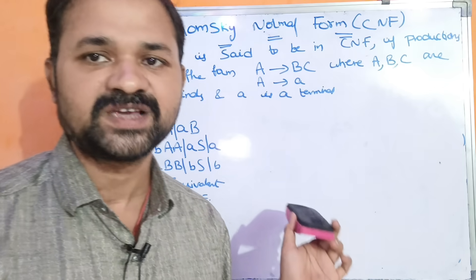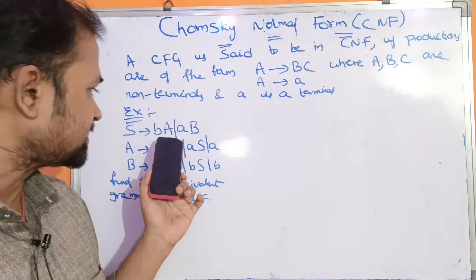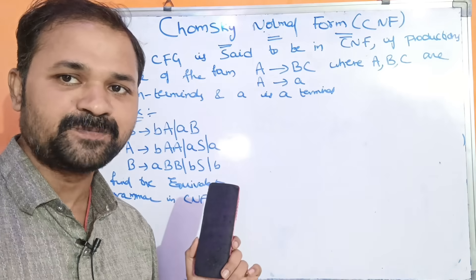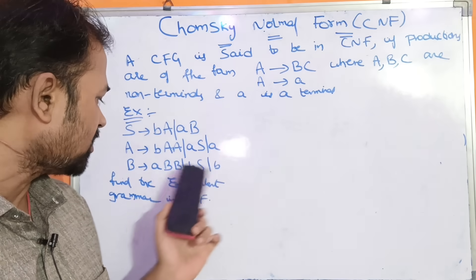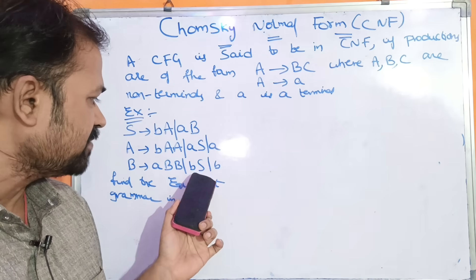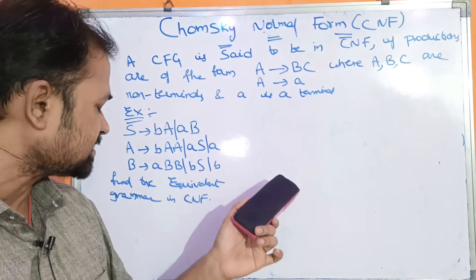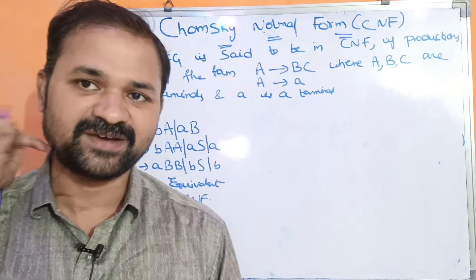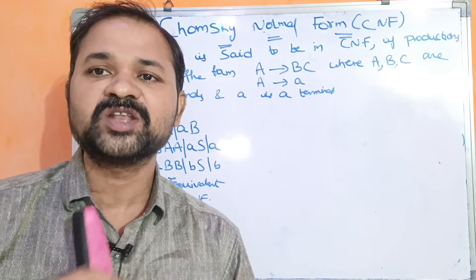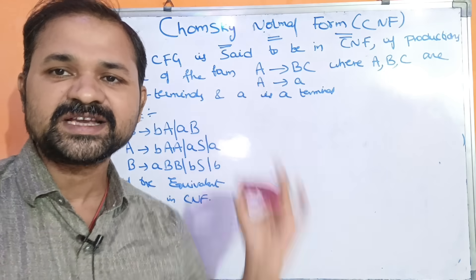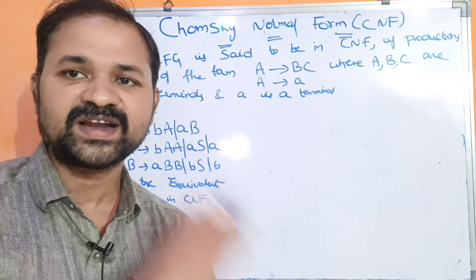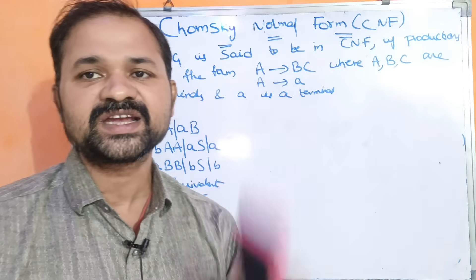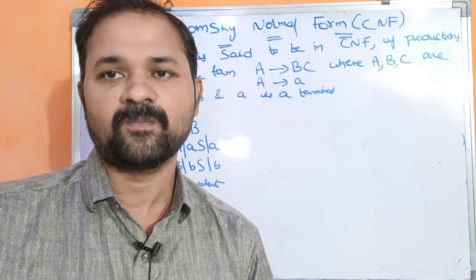Let us solve this example. S implies BA or AB. A implies BAA or AS or A. B implies ABB or BS or B. Find the equivalent grammar in CNF — Chomsky Normal Form. So here a context-free grammar is given, and our aim is to construct the Chomsky Normal Form.